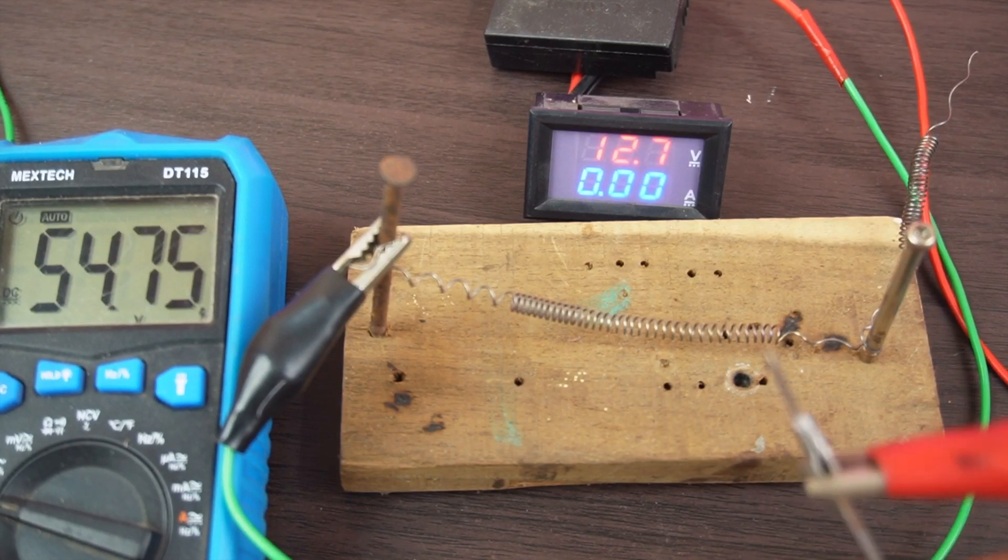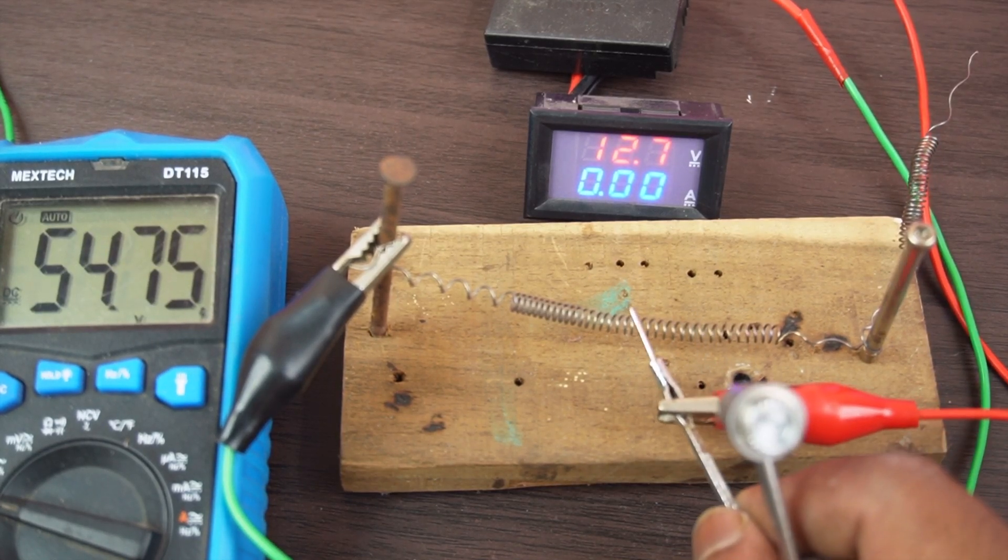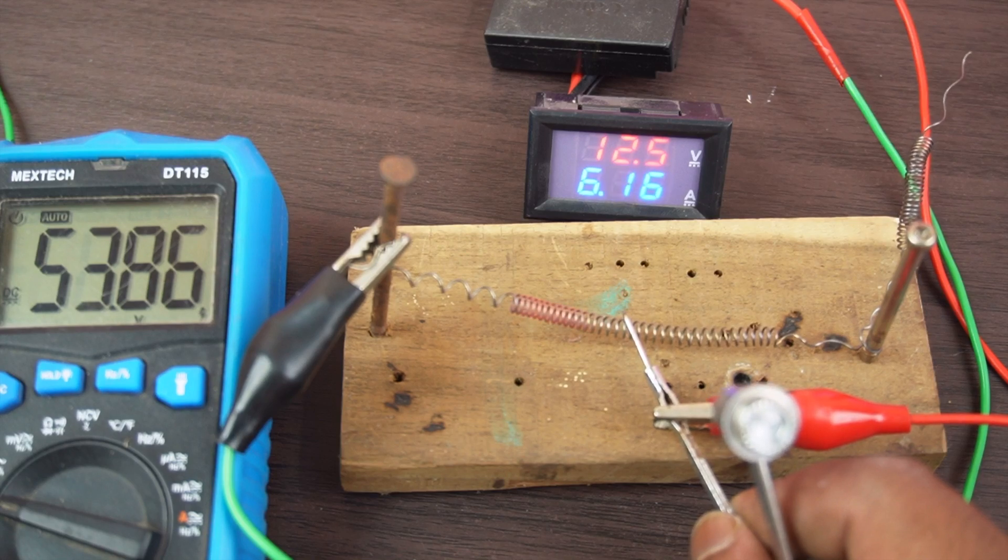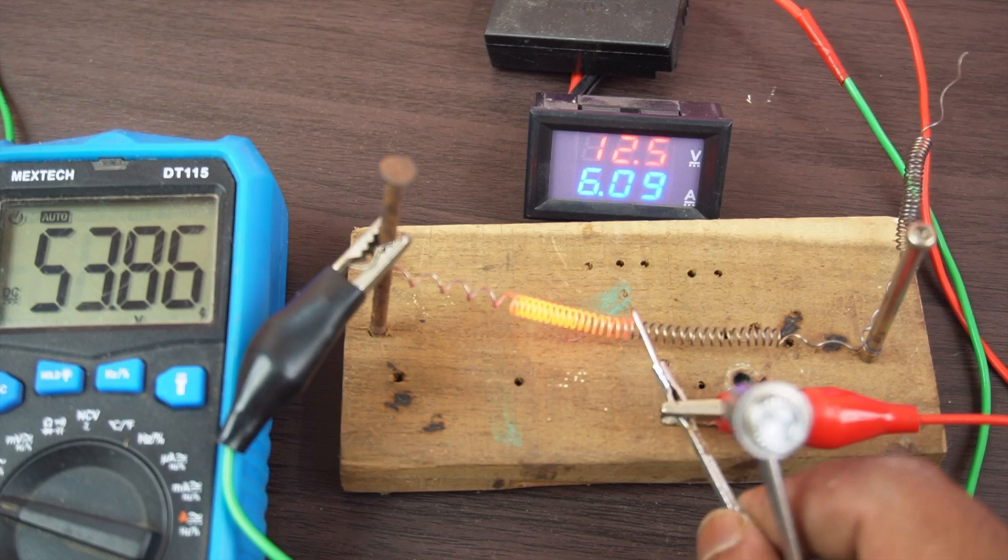Now decreasing the input voltage from 80 volts to 54 volts. Let's see if it works or not at decreased voltage. Now you can see the circuit is working very fine at 54 volts also.